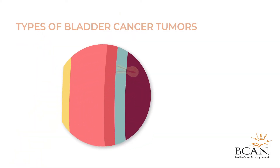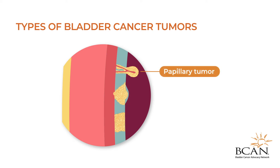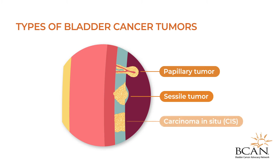Three types of bladder cancer tumors may form. These are called papillary tumors, which stick out from the bladder lining on a stalk; sessile tumors, which lie flat against the bladder lining and are more likely to grow deeper into the layers of the bladder wall; and carcinoma in situ, which is a cancerous patch of bladder lining often referred to as a flat tumor.